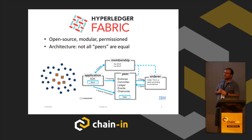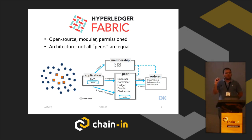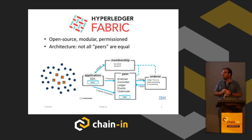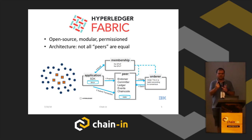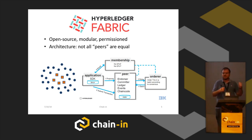One permissioned ledger getting a lot of momentum is Hyperledger Fabric — an open source, modular, permissioned blockchain. If I had to define it in one statement, it would be that not all peers are equal. You have different types of peers, and in particular a relatively small number of peers that execute consensus. The others run the smart contract, keep the ledger, and so on. There's a membership control that certifies who can participate.